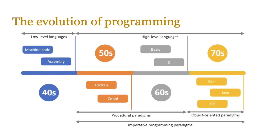If you look at the evolution of programming languages, low-level languages were quite prevalent in the 40s when hardware was very bulky, RAM was limited, and specialist experts needed to know how to code. So at that point in time, programming utilized assembly and machine code. Fast forward to the 50s, we now have transistor-based smaller machines. That's when procedural and imperative programming paradigms took hold, and languages like Fortran and COBOL were invented.